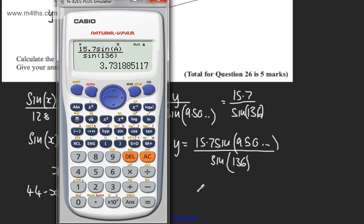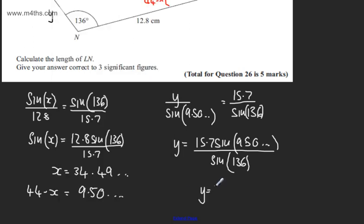That gives me 3.73. So Y equals 3.73 centimeters, correct to three significant figures. All I've done is simply plug that in.